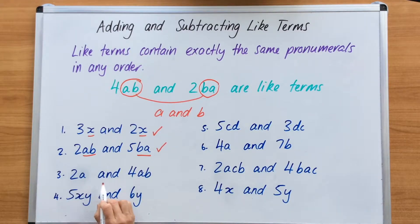Number 3 here has 2A and 4AB. This is not a like term. We have an A and an AB. That is not the same. It's the B that throws things out here. So this is not a like term. 5XY and 6Y, very similar to what we've got before us in question 3. We have an XY and a Y. It's not a like term because we have the X that ruins it for the Ys.